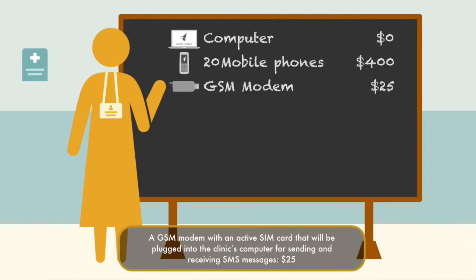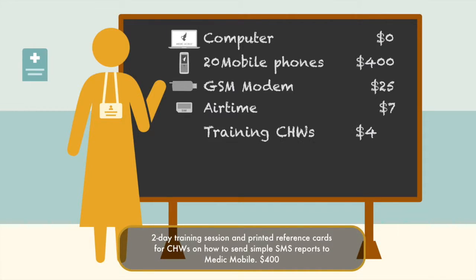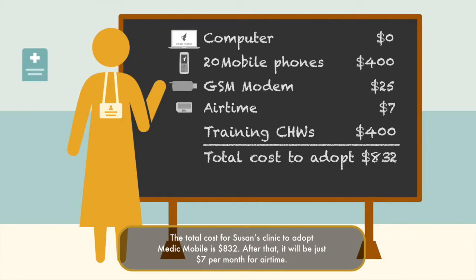A GSM modem with an active SIM card that will be plugged into the clinic's computer for sending and receiving SMS messages: $25. Airtime for the clinic's SIM card and for CHWs to send and receive messages: $7 per month total. A two-day training session and printed reference cards for community health workers on how to send simple SMS reports to MedicMobile: $400. The total cost for Susan's clinic to adopt MedicMobile is $832. After that, it will just be $7 per month for airtime.